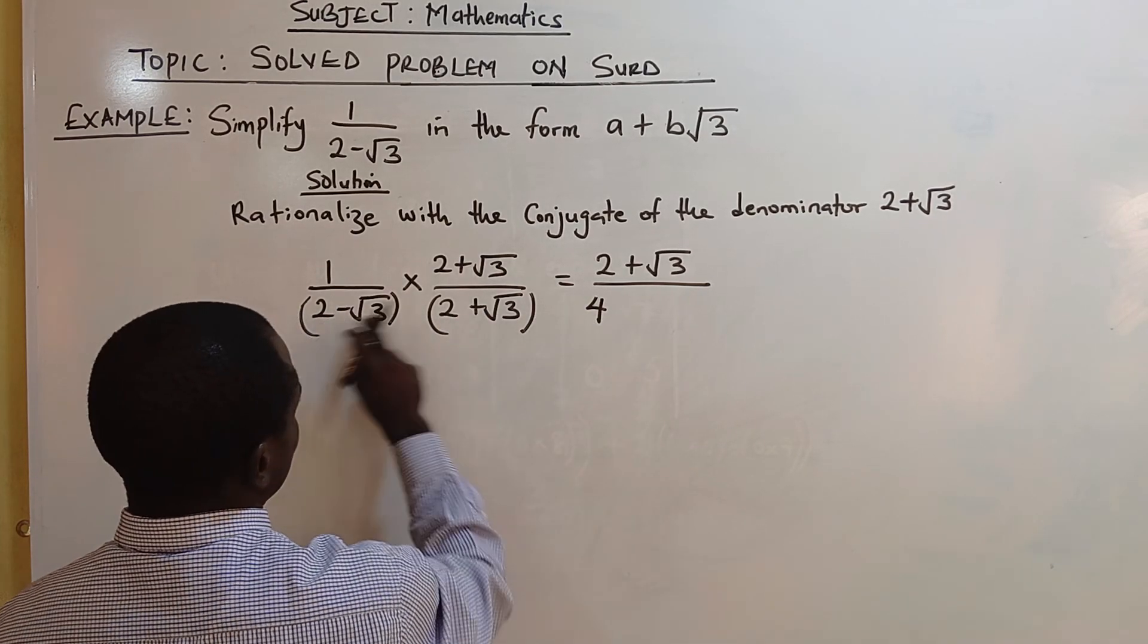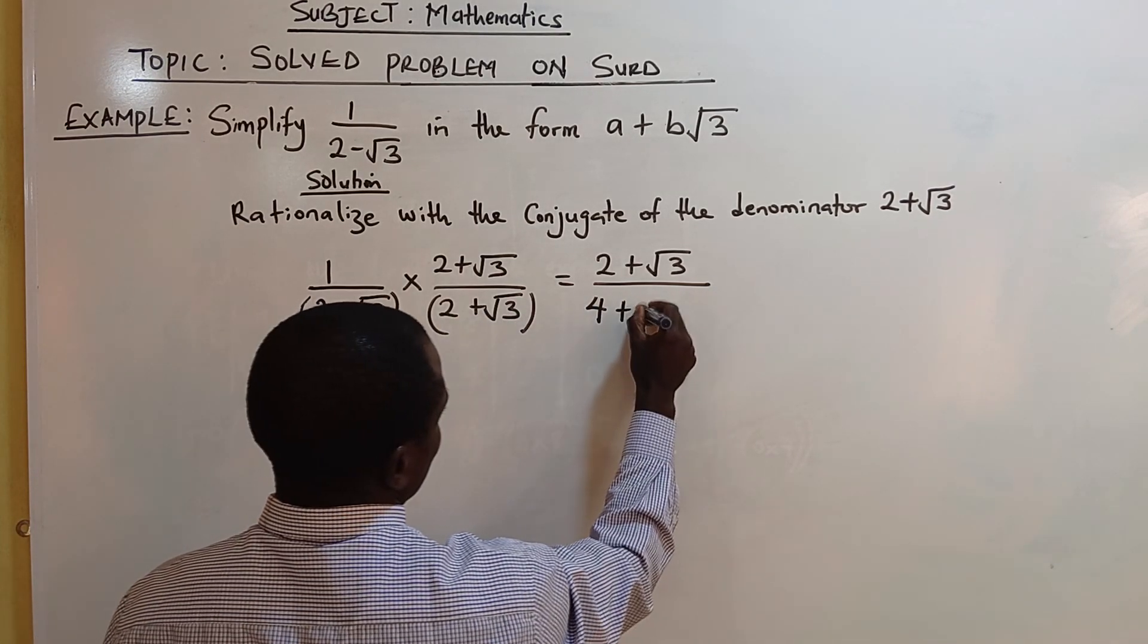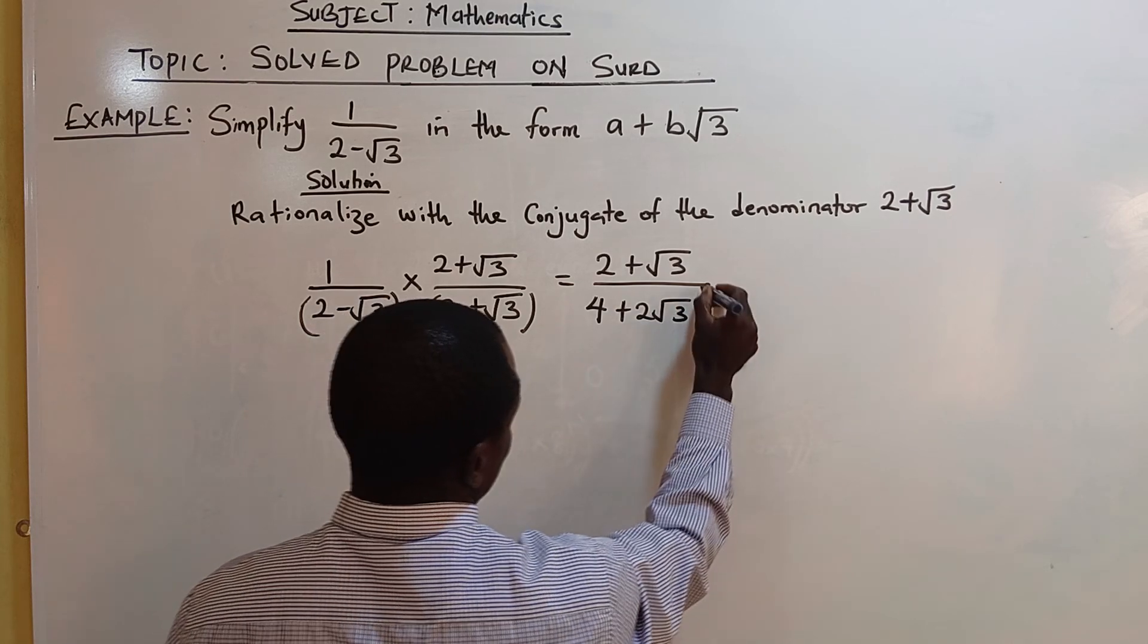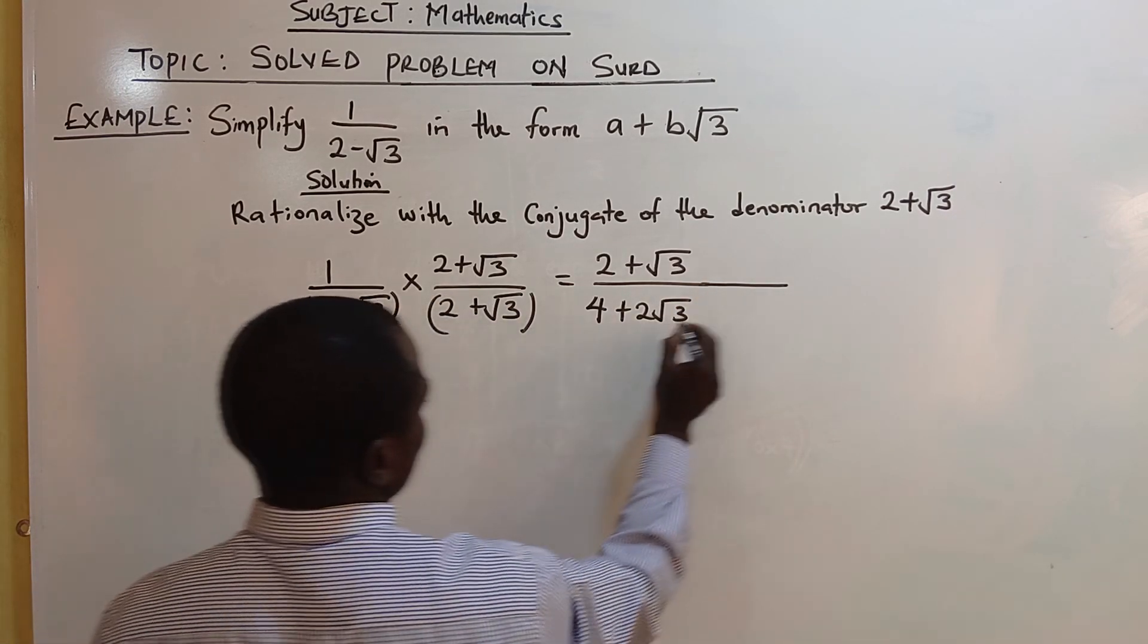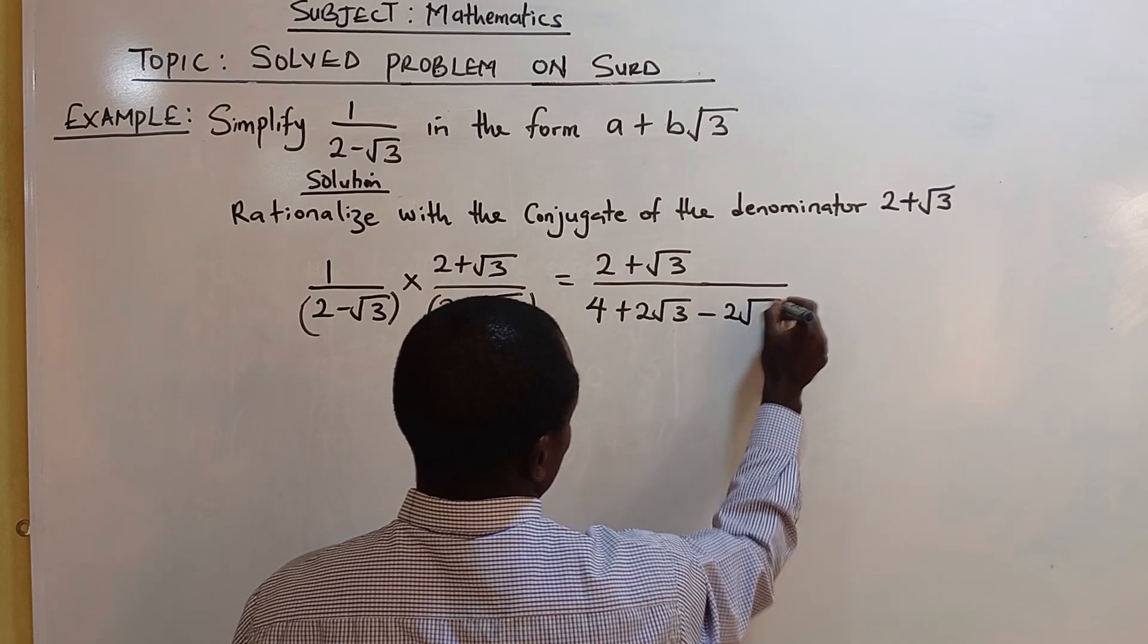We have 4, 2 times plus root 3 plus 2 root 3 minus 2 root 3 times 2 minus 2 root 3.